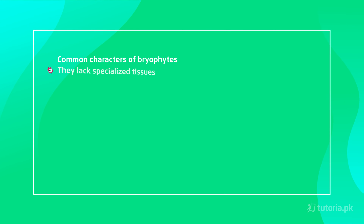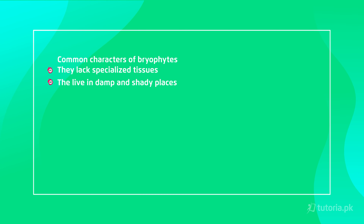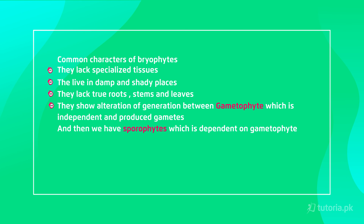Now we talk about the characters which are common among the bryophytes. The first character is that they don't have specialized tissue. They live in damp and shady places. They have root-like, stem-like, and leaf-like structures. And they have two generations which alternate: one is the gametophyte, which is independent and produces gametes; the other is the sporophyte, which is dependent on the gametophyte and produces spores.